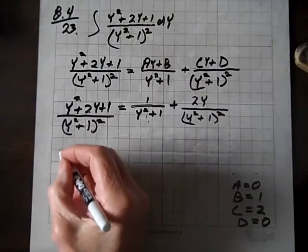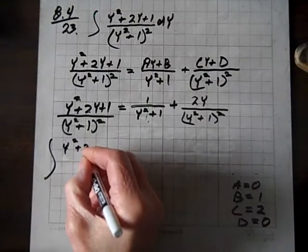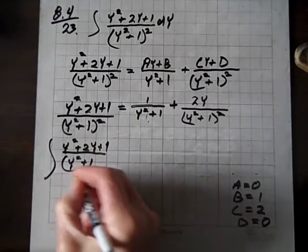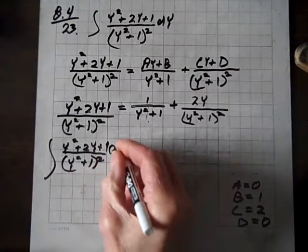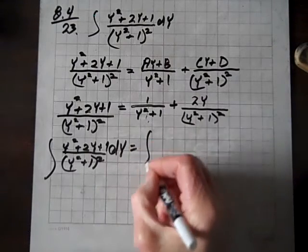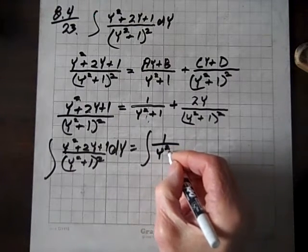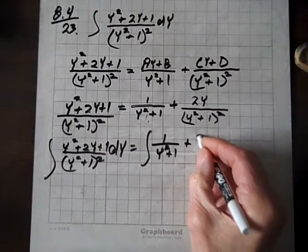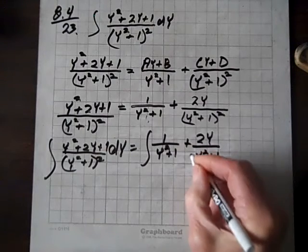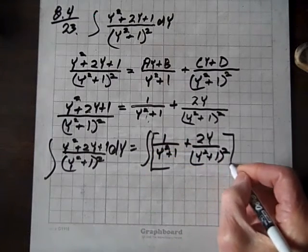So the integral of y squared plus 2y plus 1 over y squared plus 1 quantity squared dy equals, I'm going to erase these, the integral of 1 over y squared plus 1, plus 2y over y squared plus 1 squared dy.